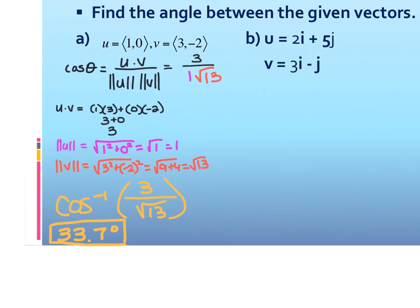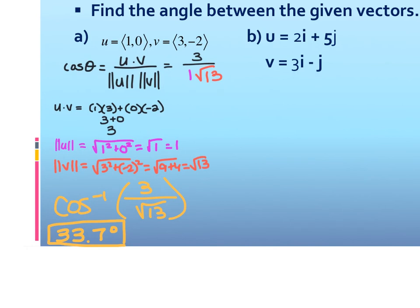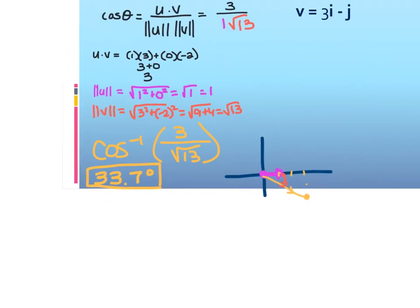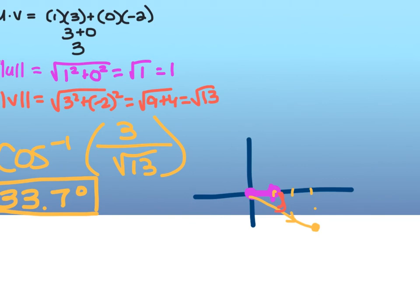Now think about this logically — if I actually graph those two points, I can get an estimate. One, zero means I have a vector that looks like the positive x-axis. Three, negative two means over three, down two — I have a vector that looks like that. And I'm saying that this angle should be 33.7 degrees. If you ended up getting something like 80 degrees for your answer and then you graph it and it looks like that, you know something's wrong.